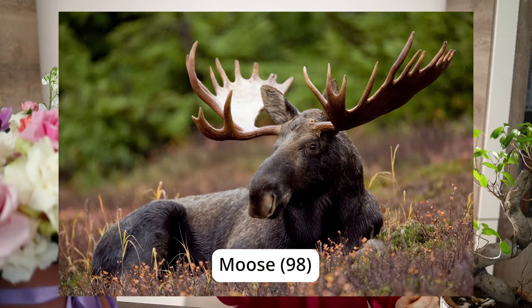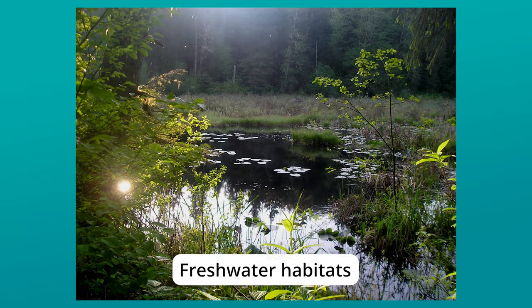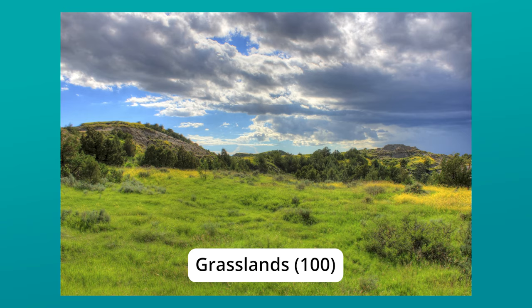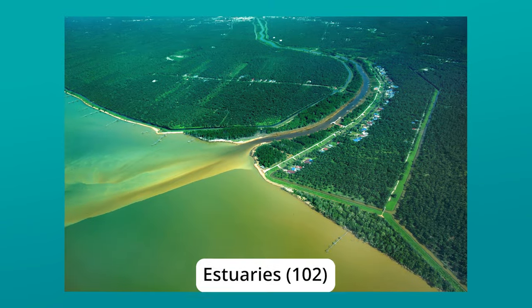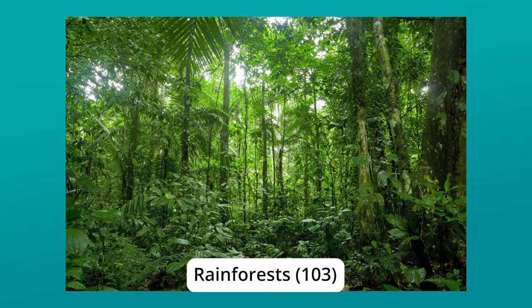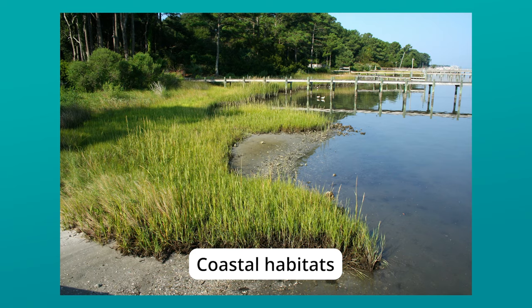Speaking of terrestrial or land animals, we've already covered many of them. Two more examples are a moose and a gazelle. As you can see, habitats are different environments where animals live. Some typical habitats are freshwater habitats, deserts, grasslands, wetlands, estuaries, rainforests, oceans, savannas, and coastal habitats.